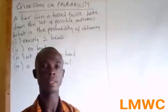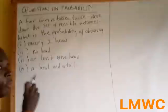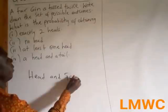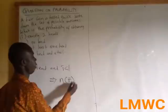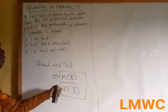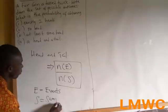The sample space is the set of possible outcomes. So if a coin is tossed once, the sample space becomes H and T — it's either you get a Head or a Tail. The formula for probability is: number of events over number of sample space, where E is events and S is sample space.